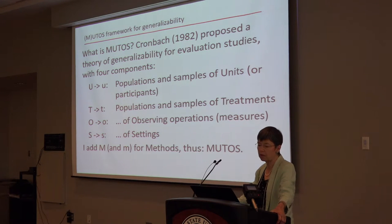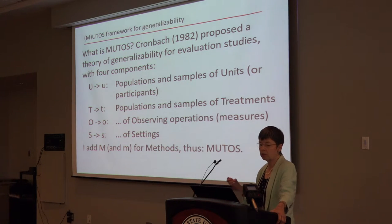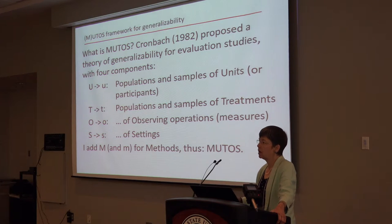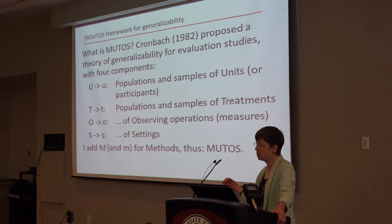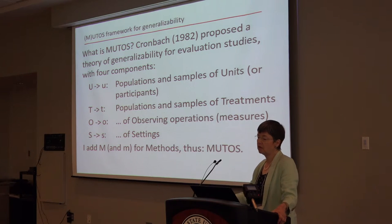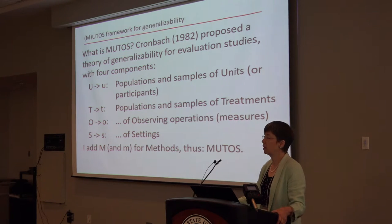I'm going to talk today about this thing that I'm calling MUTOS. Any of you who have read Cronbach deeply will know that Cronbach was a really smart guy who talked about generalizability and came up with this theory of generalization for individual evaluation studies. It had four components: units, treatments, what he called observing operations — which really means measures — and also setting. I'm using these ideas in the context of meta-analysis.